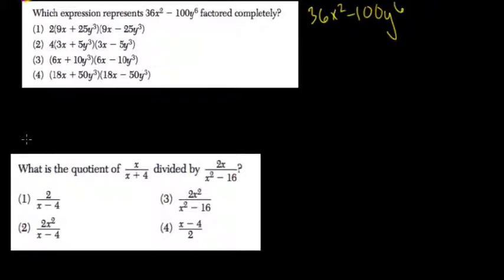we get 18 and 50. Half again, we get 9 and 25, and now there are no common factors, right?